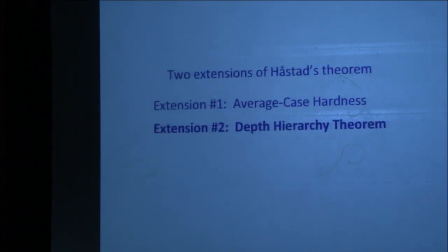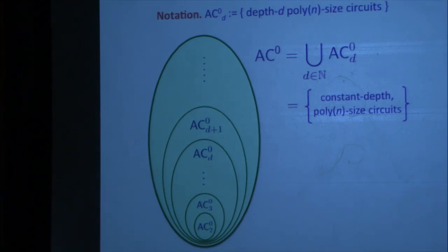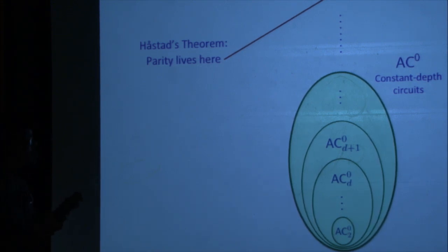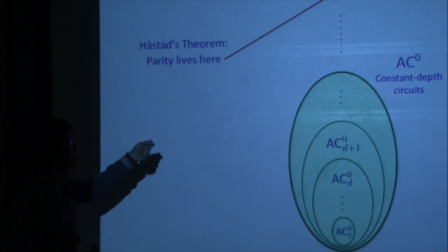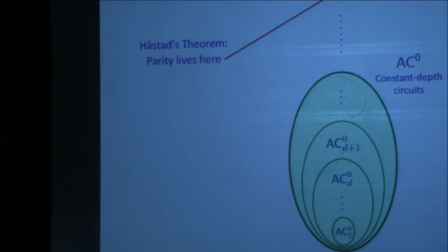Let's talk about the next extension, the depth hierarchy theorem. AC0 sub d is the class of depth-d polynomial-size circuits, and AC0 is the union over all constant d. Here's a cartoon version of Hastad's theorem: parity doesn't live in AC0. Furst, Saxe, and Sipser first showed parity is not in AC0, and subsequent work pushed the separation higher. We now know that parity requires depth roughly log n over log log n if you want polynomial-sized circuits.